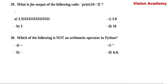Question number 29. What is the output of the following code: print(10 // 3)? Option A: 3.3333... Option B: 3. Option C: 3.0. Option D: 10. Here, option B — 3 — is the right answer, as integer division (floor division) of 10 by 3 gives 3.